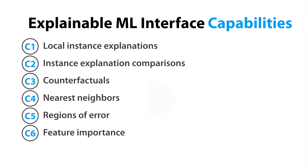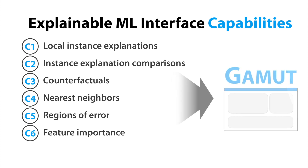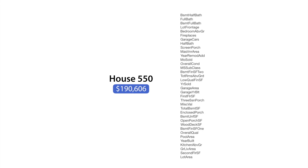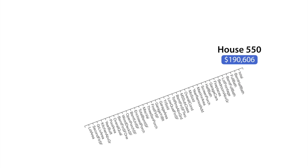With these capabilities, we designed and developed an interactive visual analytics system called Gamut to probe into model interpretability. Gamut uses a sophisticated model class called generalized additive models, or GAMs for short, that combine high accuracy with a simple intelligible structure. With that same housing model in mind, let's consider house 550 that's predicted to cost $190,000. With Gamut, we can see the breakdown of how each feature contributes to the final prediction.